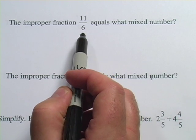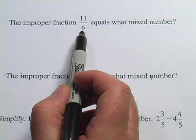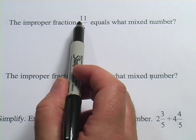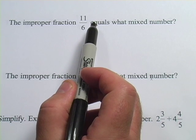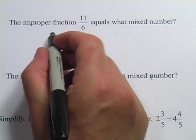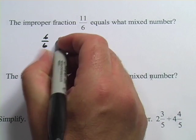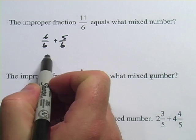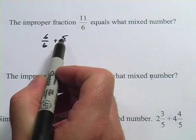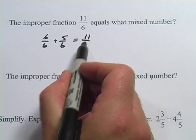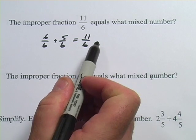The way to convert it to a mixed number is to figure out how many 6's are up here in 11. How many can you take away? Well, 11 minus 6 would be 5. So this would be, you can think about it this way, 6 sixths and 5 sixths. If you were to add those together, 6 plus 5 is 11. That would equal 11 sixths. So this is just another way of rewriting this.